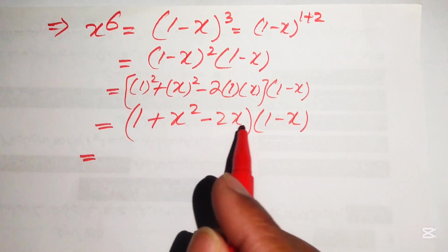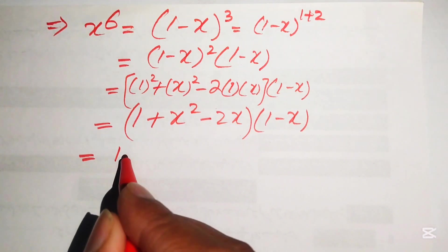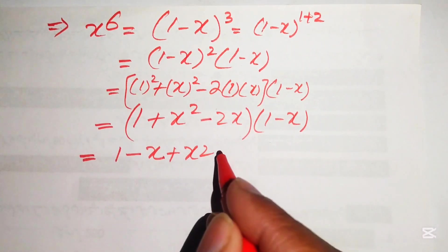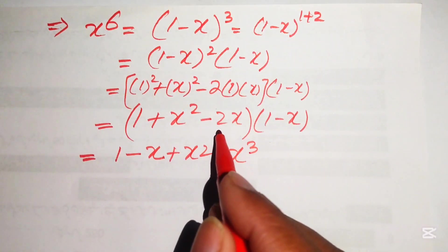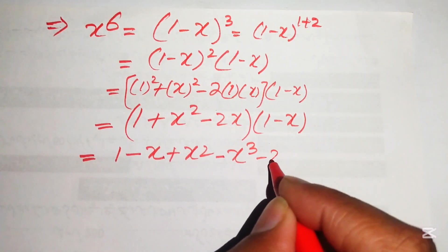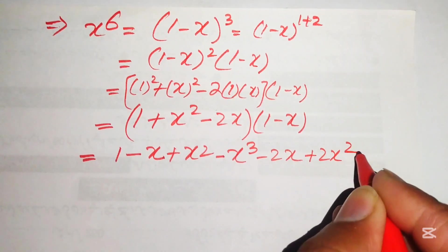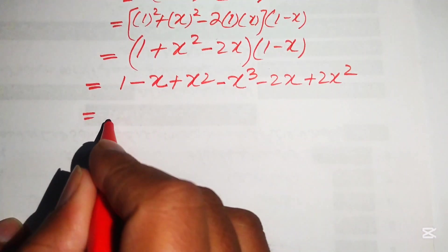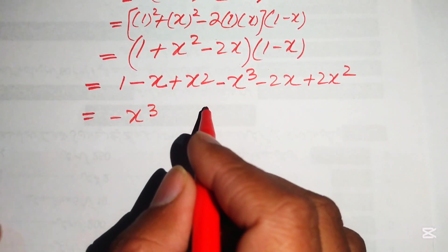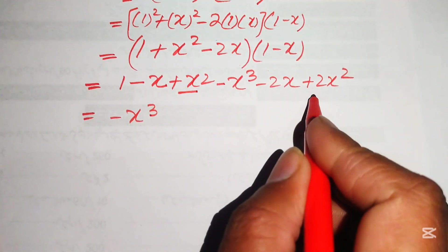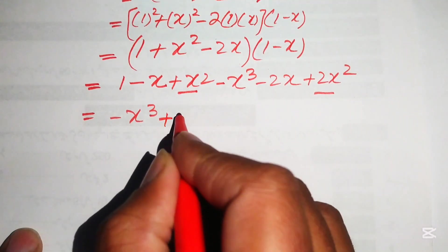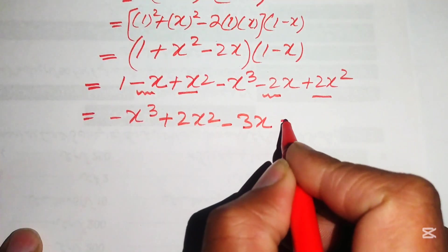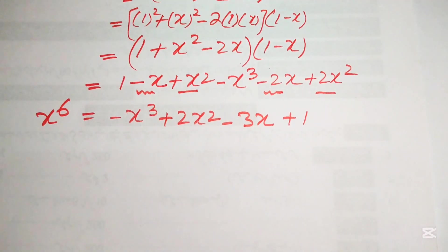We multiply out (1 + x² - 2x)(1 - x): 1·1 = 1, 1·(-x) = -x, x²·1 = x², x²·(-x) = -x³, (-2x)·1 = -2x, (-2x)·(-x) = +2x². Collecting like terms: -x³ + (x² + 2x²) + (-x - 2x) + 1 = -x³ + 3x² - 3x + 1. So x⁶ equals -x³ + 3x² - 3x + 1.